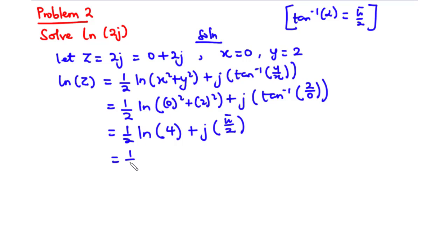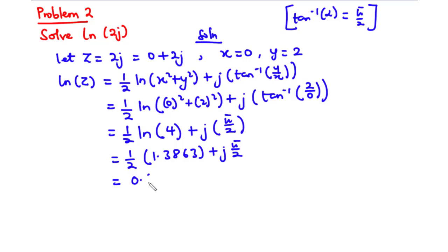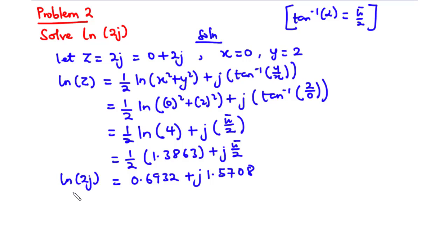We have one-half times ln of 4, which is 1.3863, plus j·pi over 2. Half of 1.3863 gives 0.6932, and pi over 2 gives 1.5708. Therefore, the principal value of ln of 2j equals 0.6932 plus j·1.5708.